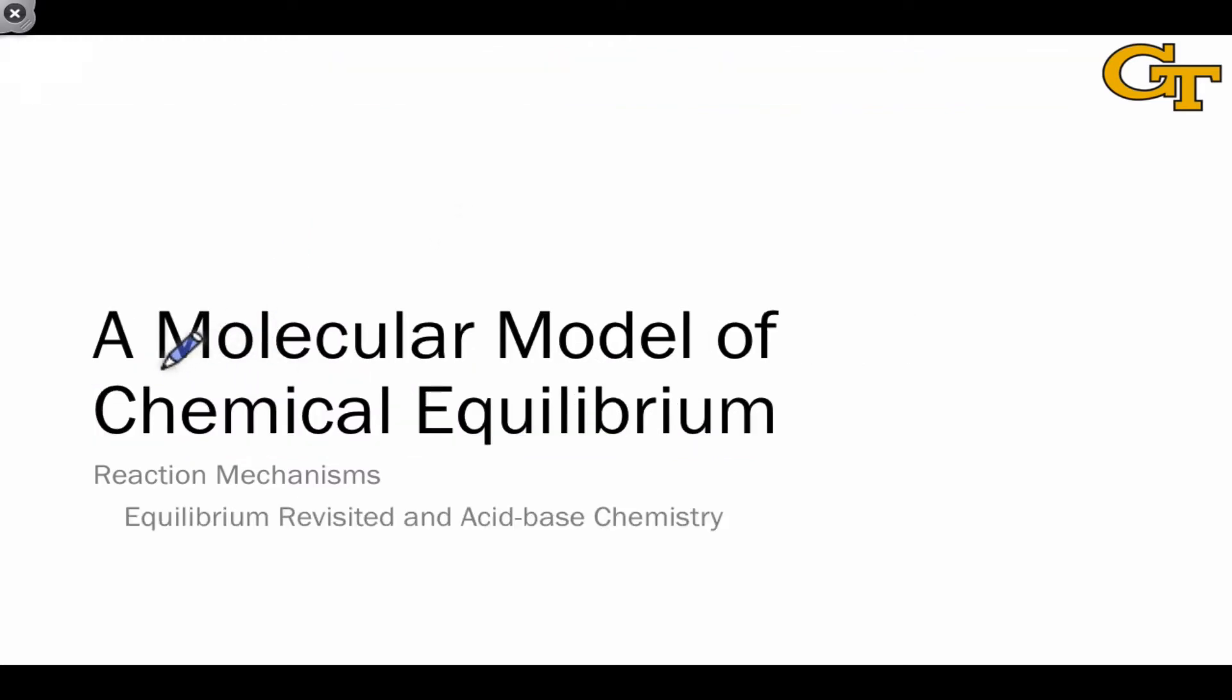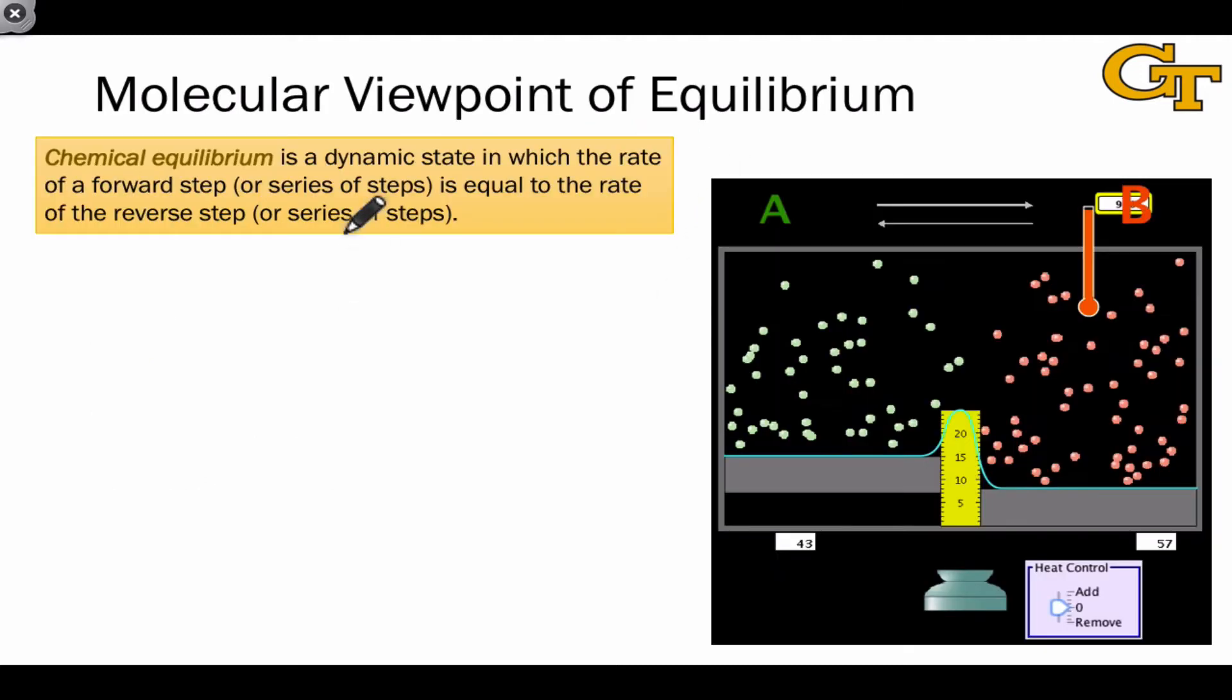We're going to start by developing a molecular-level model of chemical equilibrium, essentially answering the question, what is it that molecules are doing when a process such as the conversion of a reactant A into a product B is in equilibrium? We define chemical equilibrium as a dynamic state in which the rate of a forward step or series of steps is equal to the rate of the reverse step, and this equation of the forward and reverse processes is the hallmark of chemical equilibrium.